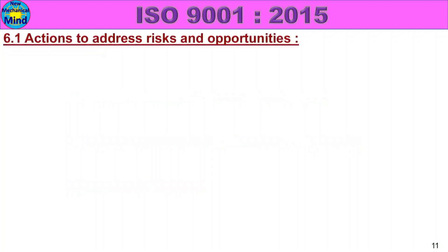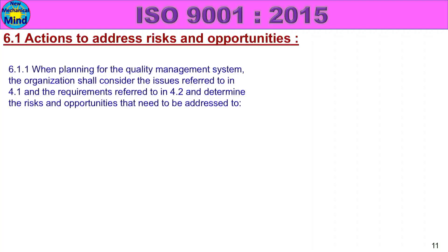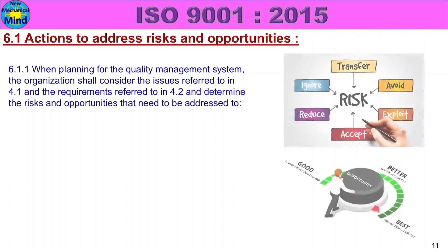First, 6.1 — Actions to Address Risks and Opportunities. There are two additional subclasses. 6.1.1: When planning for the quality management system, the organization shall consider the issues referred to in 4.1 and the requirements referred to in 4.2, and determine the risks and opportunities that need to be addressed.